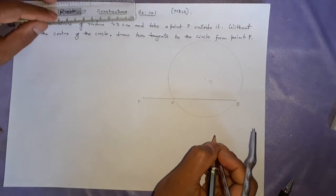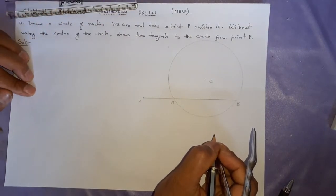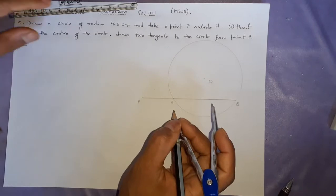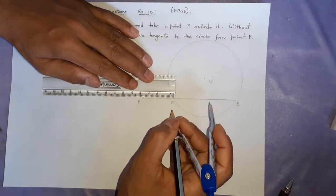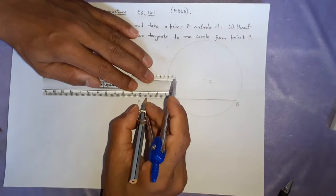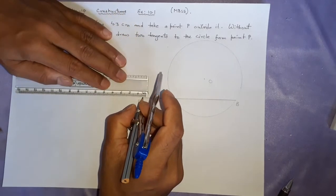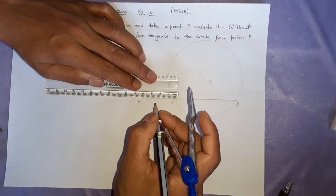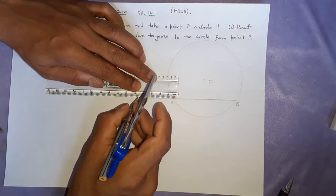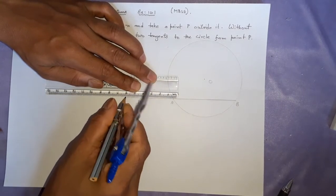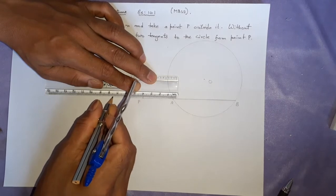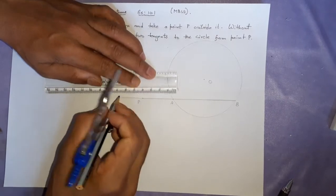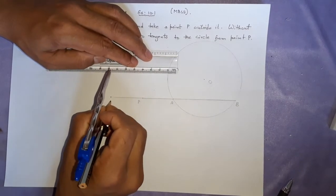After that you are going to make PA longer. How long? This length will be equal to 3.7. From here to here it is 3.7, so also here you will get 3.7 again. So 1, 2, 3, 0.5, 6, 7 here. So this we will call it C.